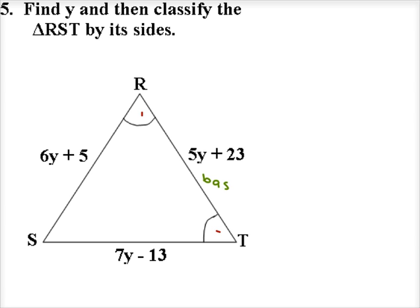So let's solve for y. We can only use those pieces of information to solve for y because even though it's tipped on its side, those are the legs of the isosceles triangle. Since the legs are congruent, 6y plus 5 is equal to 7y minus 13.